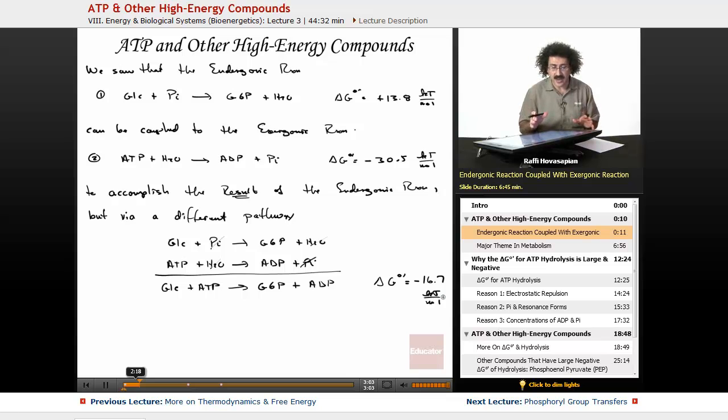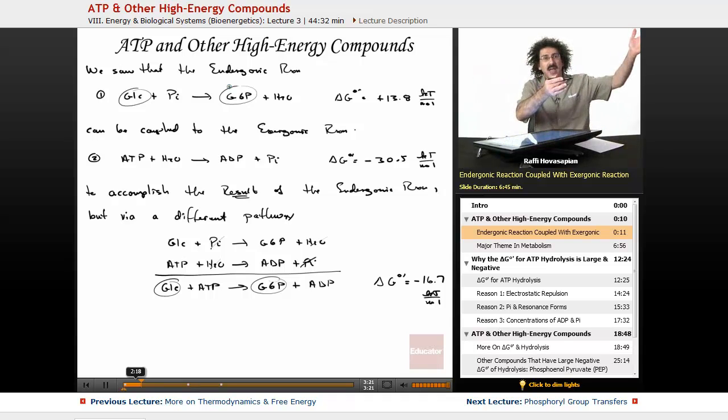So we saw that we could do that, an endergonic reaction, so we achieved the same purpose. Our purpose was to take glucose and to convert it to glucose 6-phosphate. Well, that's the same thing here. We want that reaction to take place, but we just gave it a different pathway by coupling it with a reaction that has enough energy to give away to actually turn an endergonic reaction into an exergonic reaction. This is a very important theme, and this is exactly what adenosine triphosphate does.